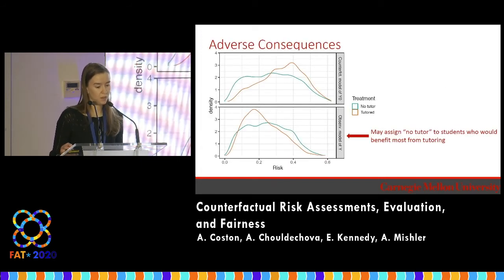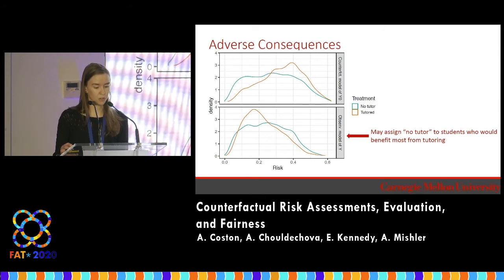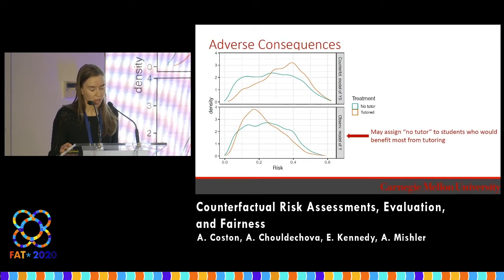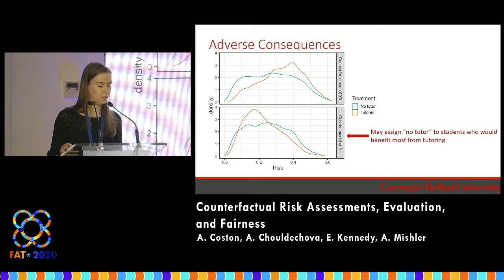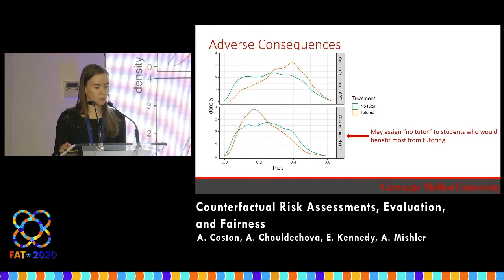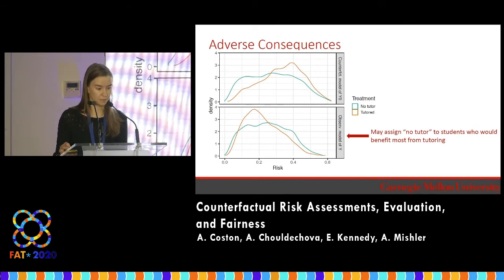For instance, here we compare, for the real-world child welfare data, the risk distributions of a counterfactual model in the first row to an observational model in the second row. They differ significantly on their assessment of risk for the tutored population, given in red. The observational model suggests that this population is low-risk, but in fact they only appear to be low-risk because they were treated. Making future decisions based on such an assessment may lead us to fail to treat those who actually benefit from treatment.